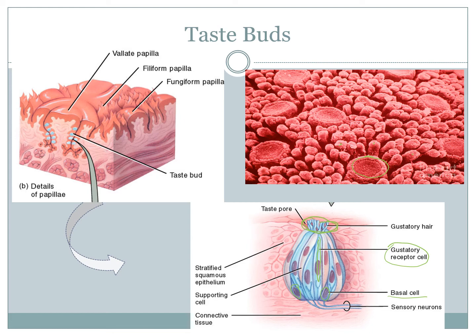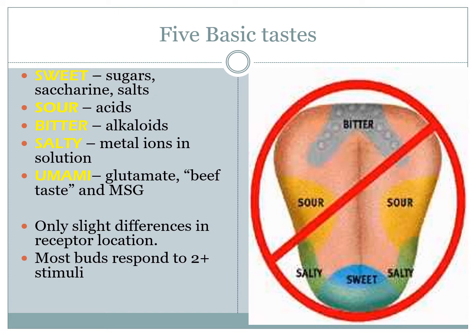Each taste bud is obviously tuned to pick up different stimuli. The whole map of the tongue showing where certain things were tasted has been debunked for about 30 years. Each taste bud is actually responsible for interpreting two or more different types of tastes — it's a mixed pattern all over the tongue of different receptor cells. Some taste buds can do all five, but the minimum is two.